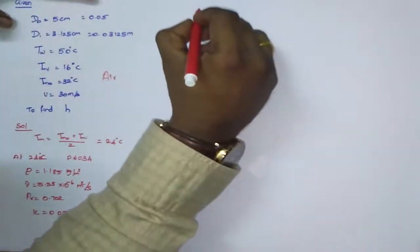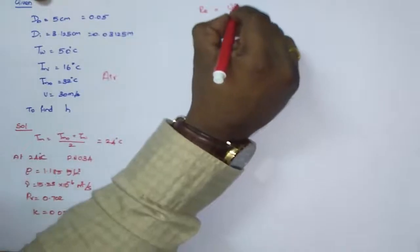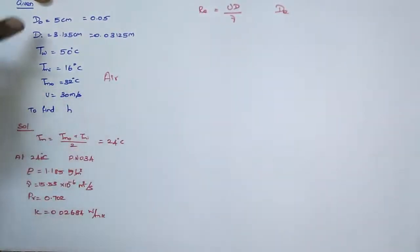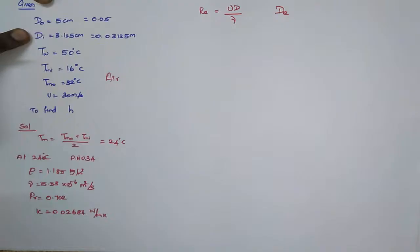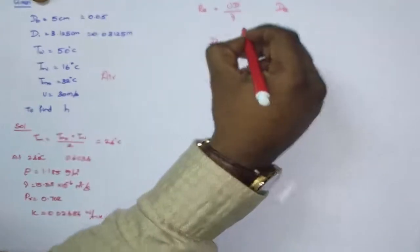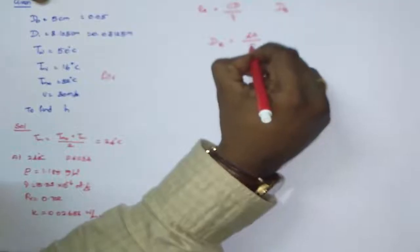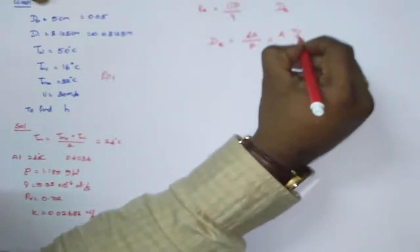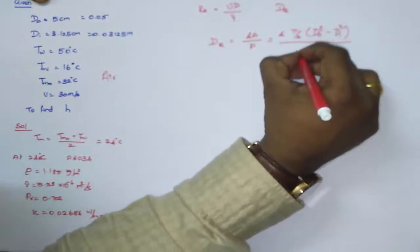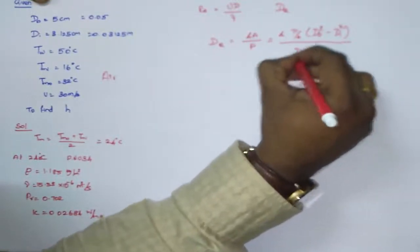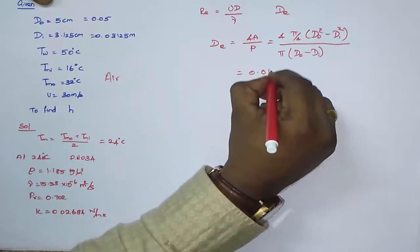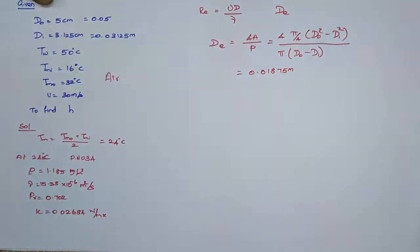The second step is to find the Reynolds number: Re = u·D / ν. Since both outer and inner diameters are given, use the equivalent diameter. For an annulus, D_eq = 4A / perimeter = 4 × (π/4)(d_o² − d_i²) / (π(d_o − d_i)), which gives D_eq = 0.01875 m.